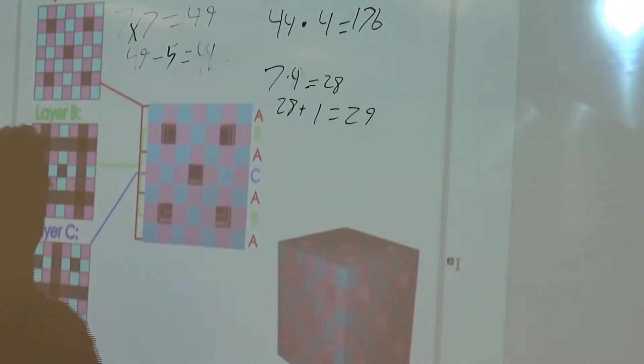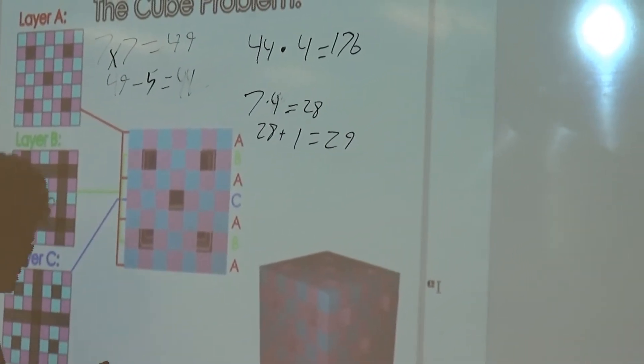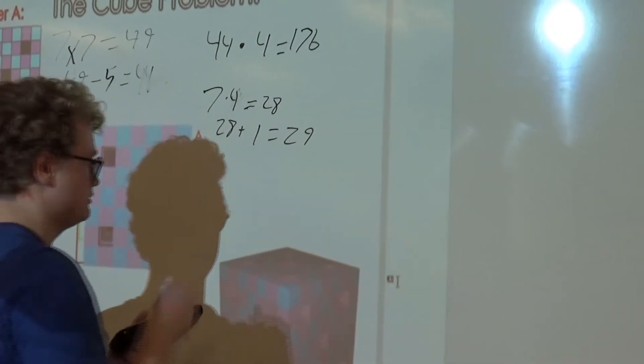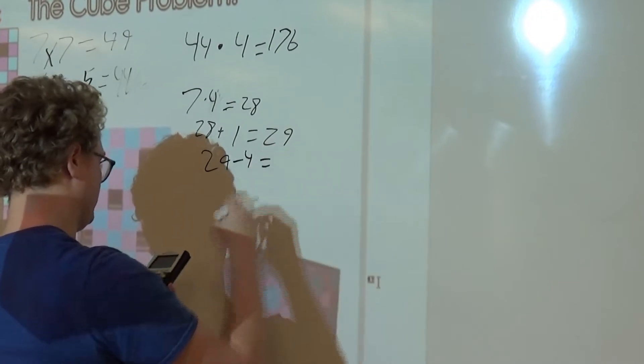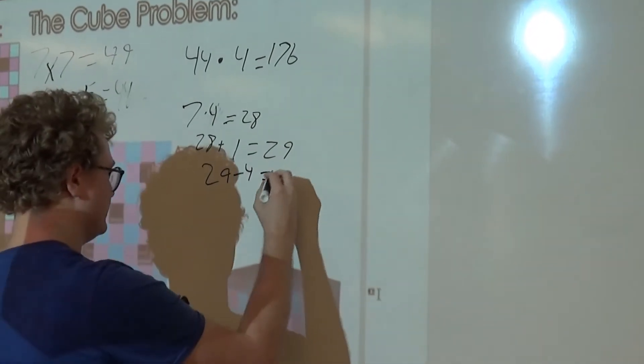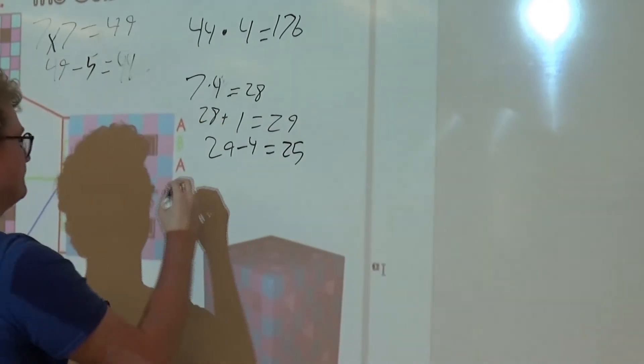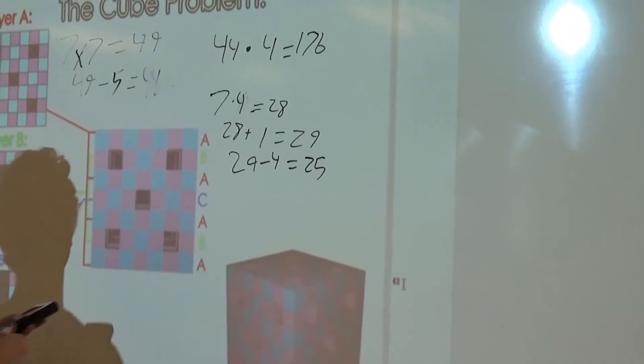So that's 29 cubes here, but 4 of them intersect. So we just subtract 29 minus 4 to get 25. That's 25 cubes for each of layer B.